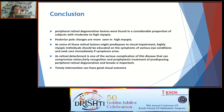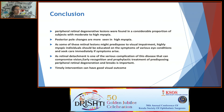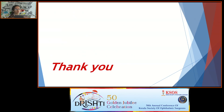Conclusion: Peripheral retinal changes were found in a considerable proportion of subjects with moderate-to-high myopia. Posterior pole changes were more commonly seen in high myopes. Some of these retinal changes might predispose to visual impairment. Highly myopic individuals should be educated about symptoms like flashes and floaters and seek care immediately if symptoms arise, as retinal detachment is a serious complication that can compromise vision. Early recognition and treatment of predisposing peripheral retinal degeneration and breaks is important, and timely intervention can lead to good visual outcomes.